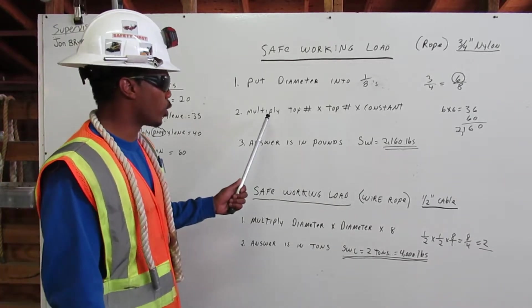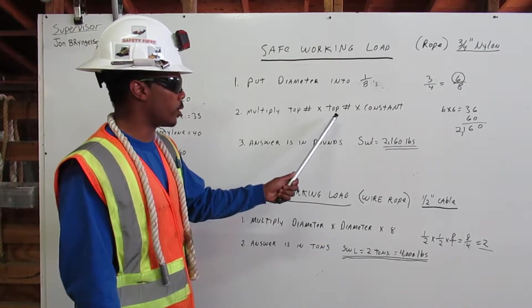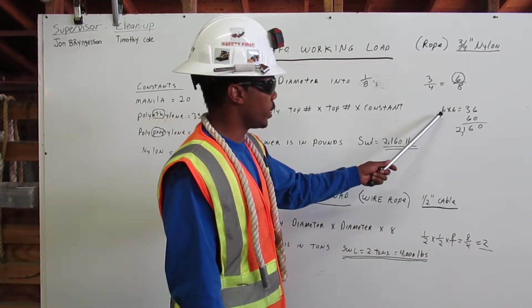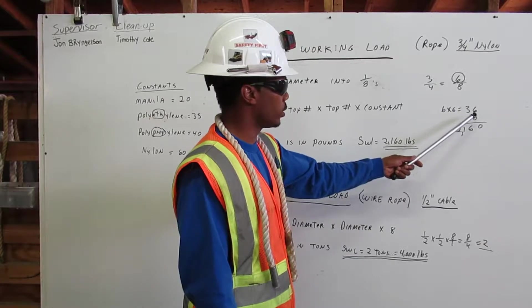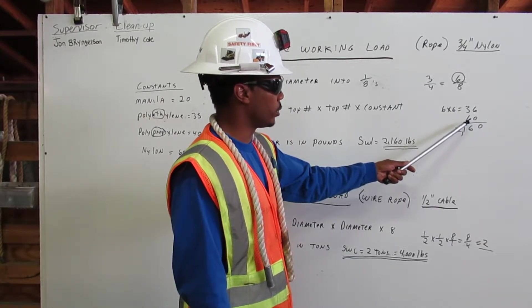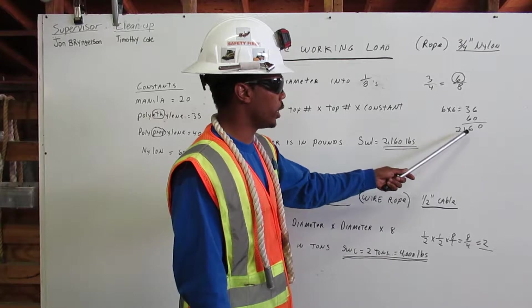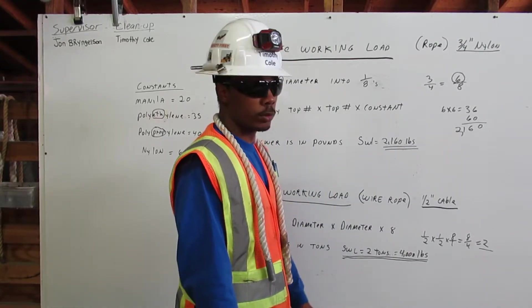So, we multiply top number times top number times constant. We have 6 times 6 equals 36 times 60, which we get 2160.